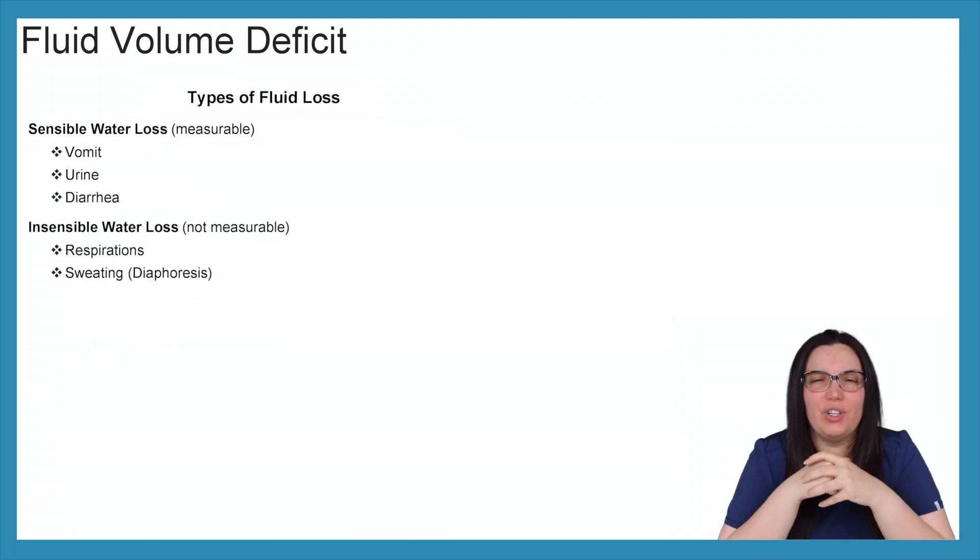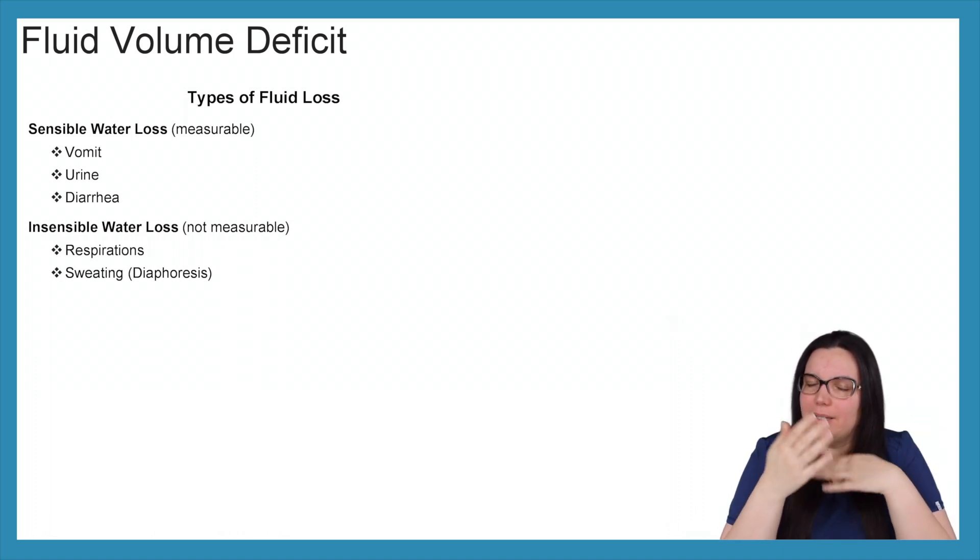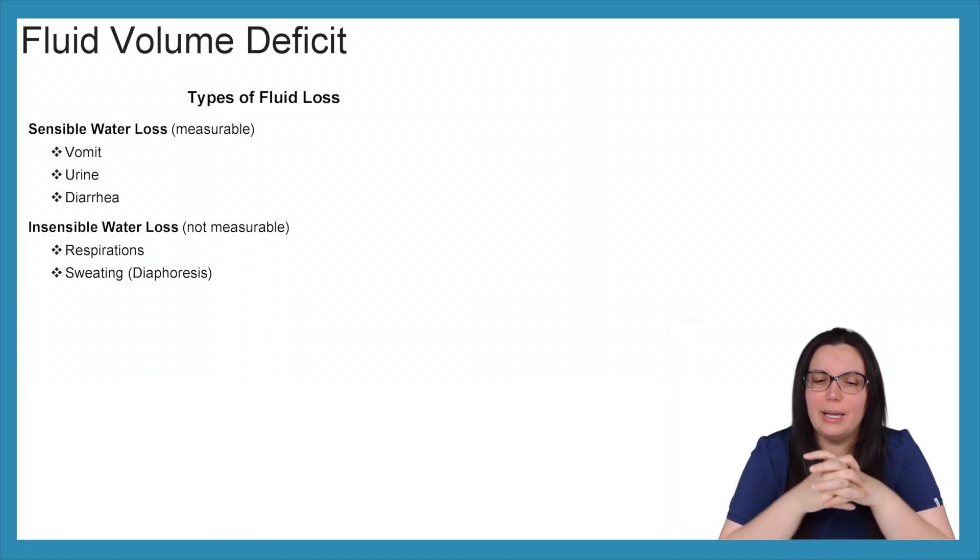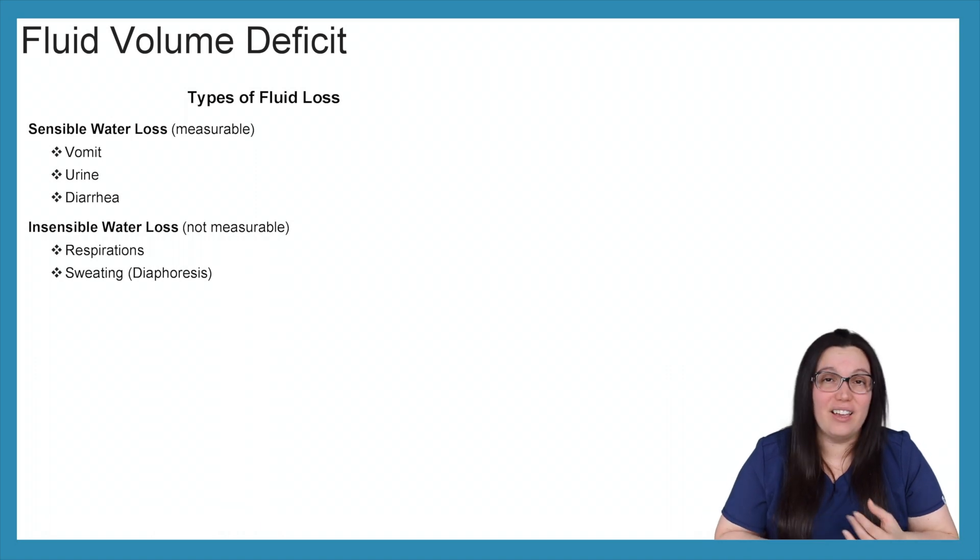So there's two major types of fluid losses. We have sensible water loss as well as insensible water loss. And we went much more into depth of this in my previous video about fluid movement. But again, we have sensible water loss, which means it can be measured. You lose it and you know you've lost it. So what are some examples? We have vomiting, urine output, as well as diarrhea.